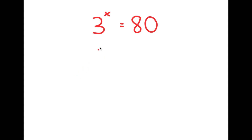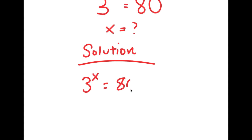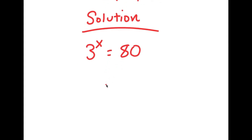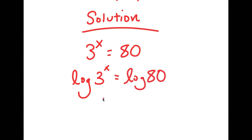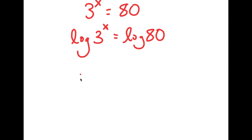In this next problem I have 3 to the power of x is equal to 80, and I want to find the value of x. For the solution, I start with 3 to the power of x equals 80 and take the log on both sides, so I get log(3 to the power of x) equals log 80. We want to find x, but it's hard when it's in an exponent form, so we need to bring x down.